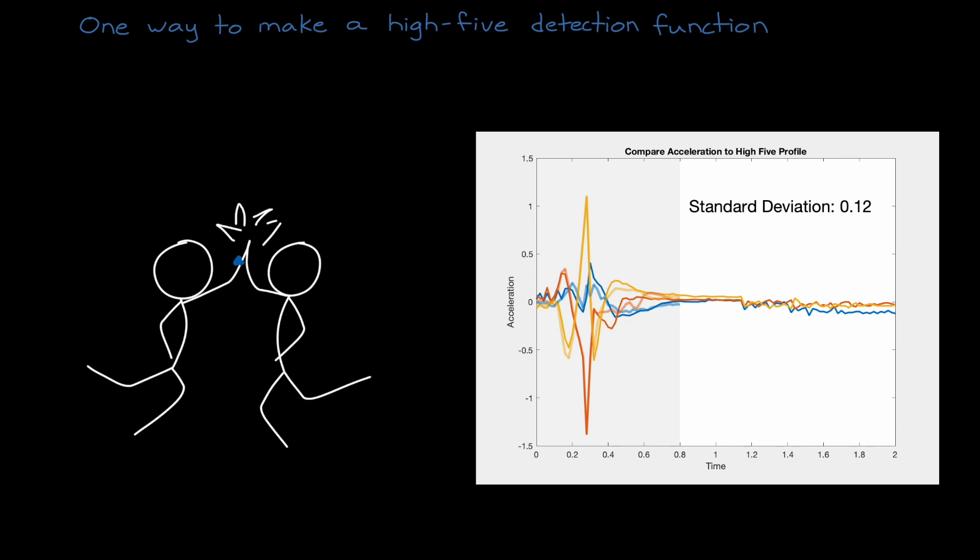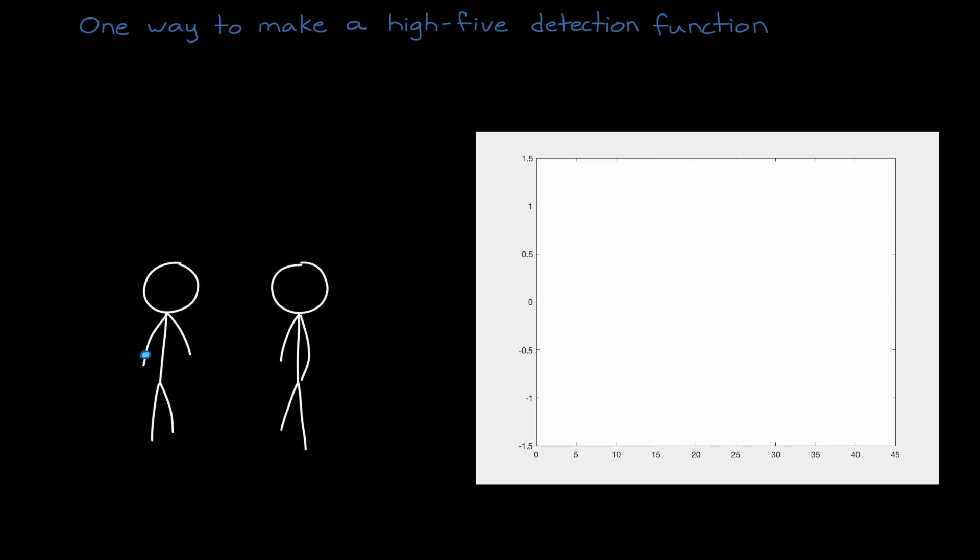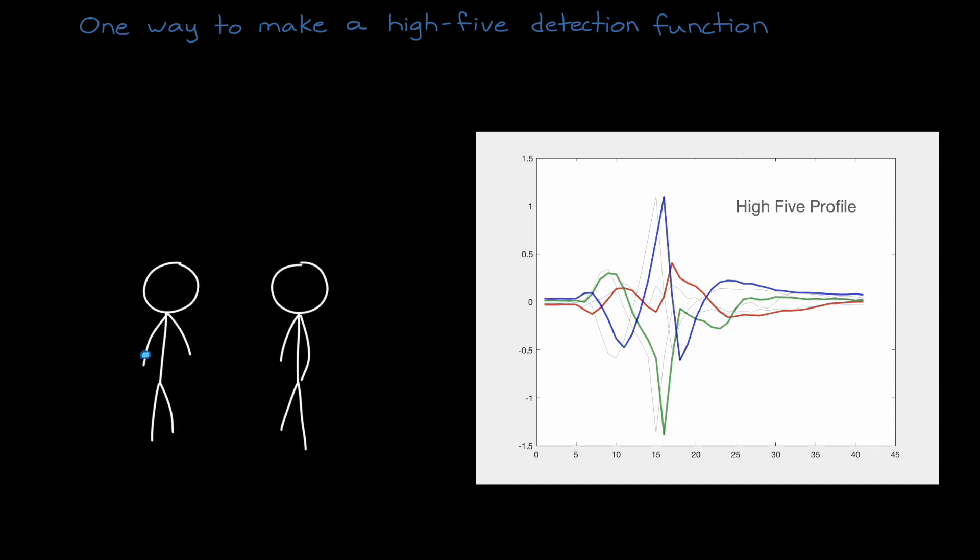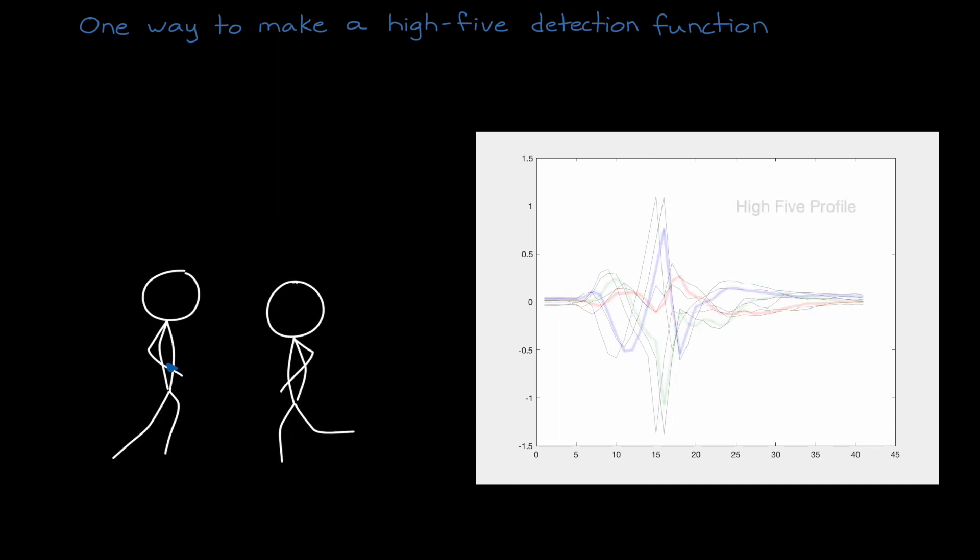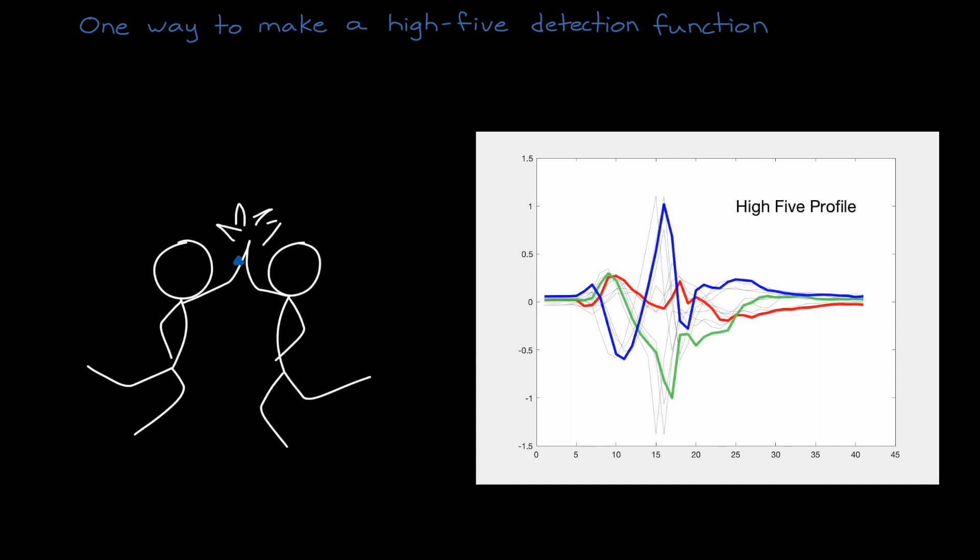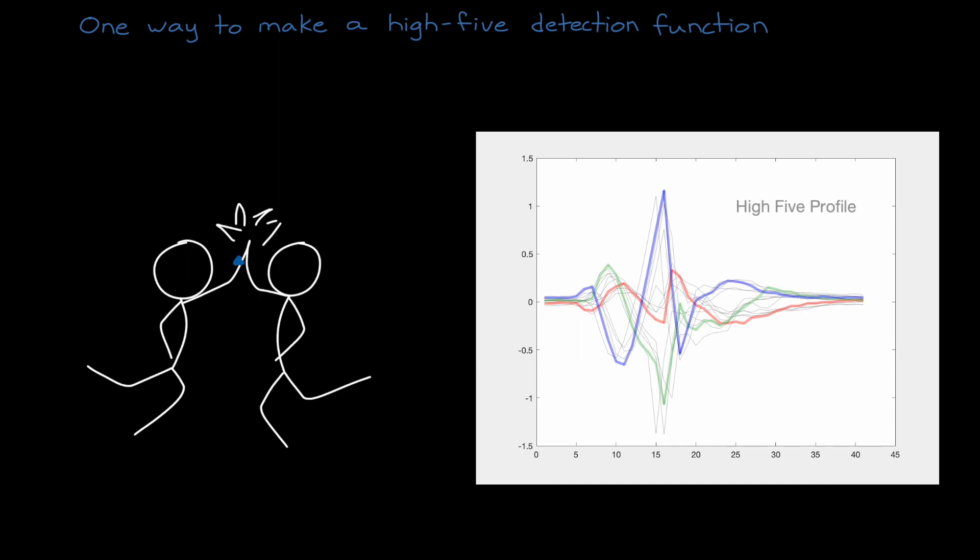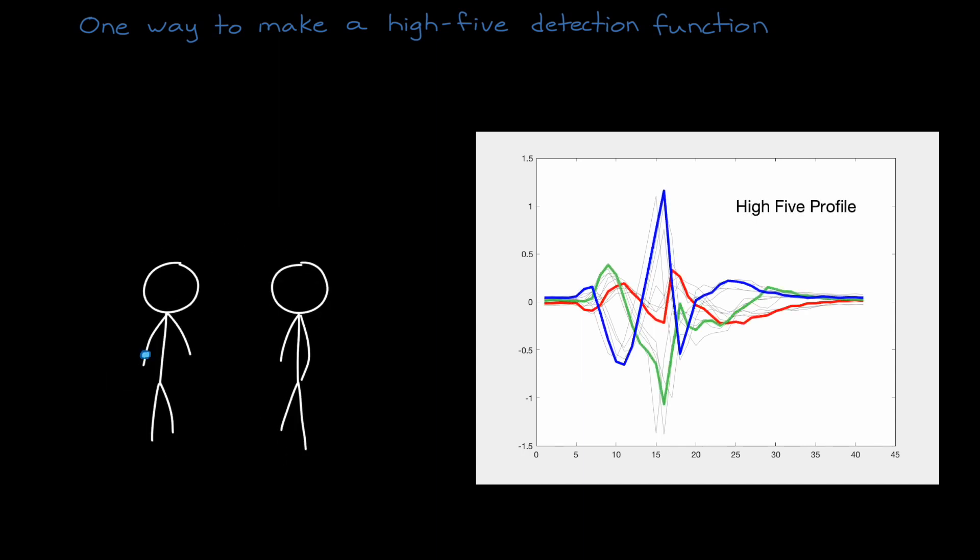However, we can make this problem more difficult by realizing that every high-five is not the same, but that the acceleration pattern varies from instance to instance. Some people might move their hand faster or slower, or pause right before the big slap, or just high-five in a strange way. If we want to use our standard deviation approach, we have to do that for each profile in the set. And if the deviation between any of these profiles and the sensed acceleration drops below some threshold, we claim a high-five took place.